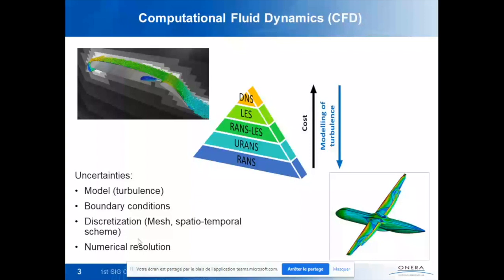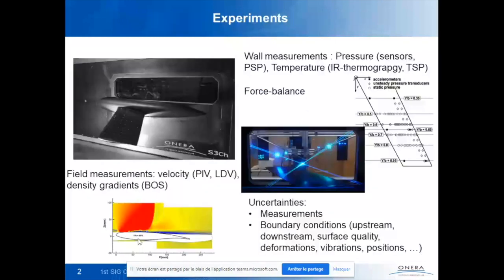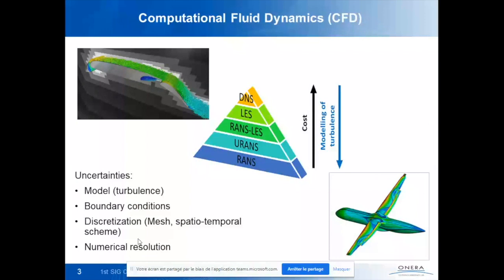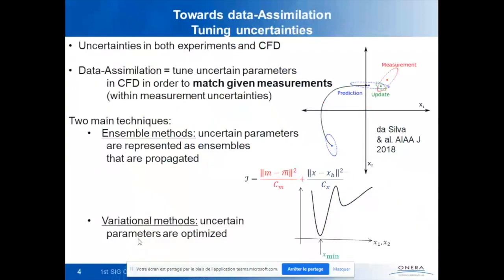Data assimilation combines these two worlds and tries to tune uncertainties so they match. It can be defined as tuning uncertain parameters in a CFD model in order to match given experiments — and this matching is always within measurement uncertainty.